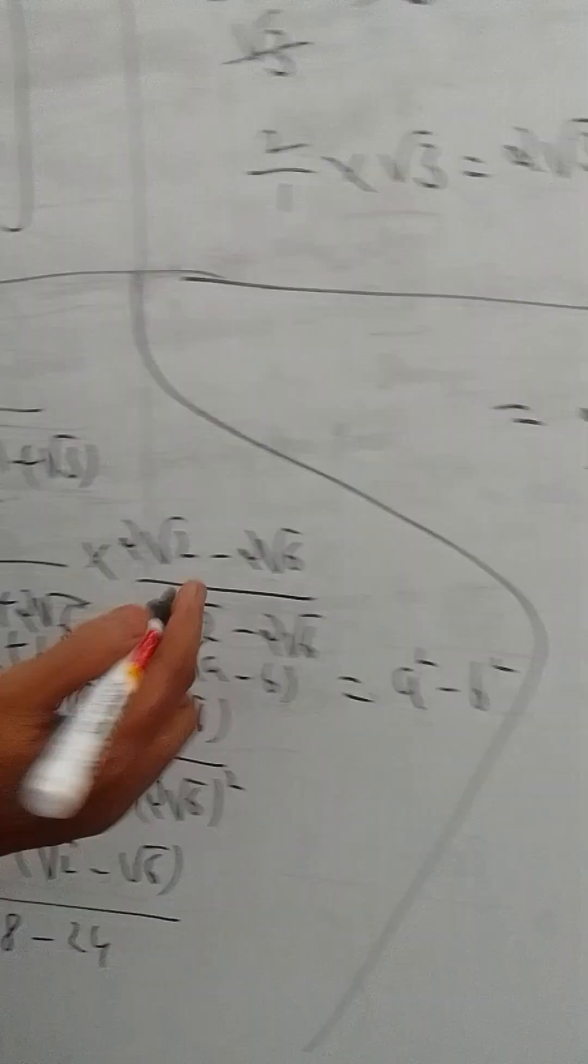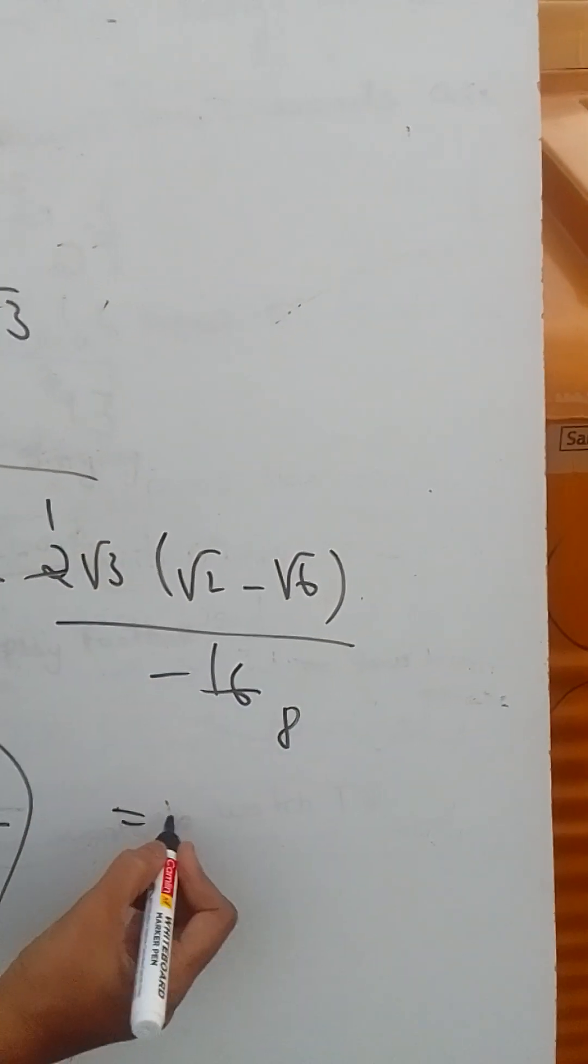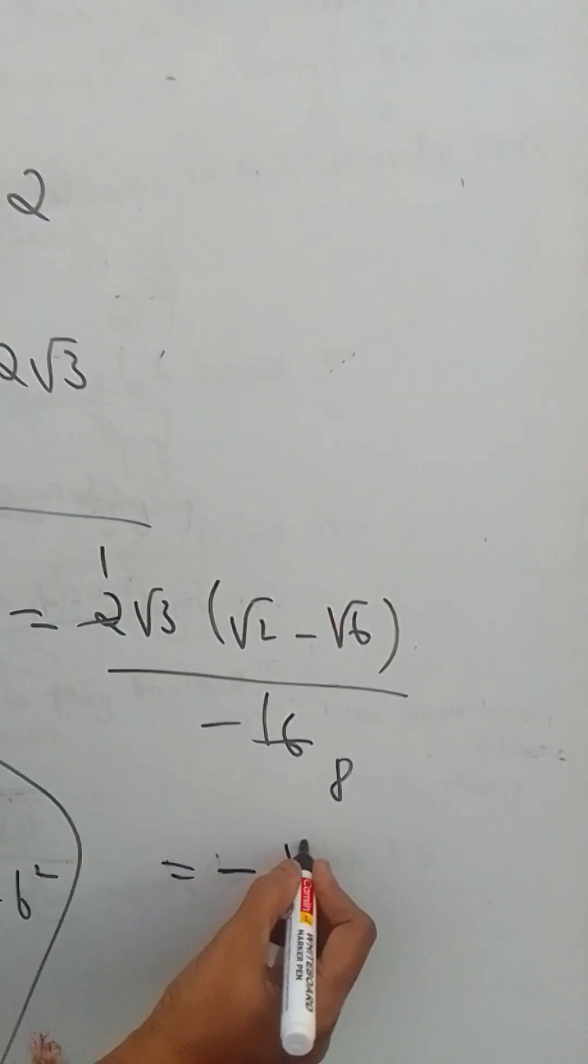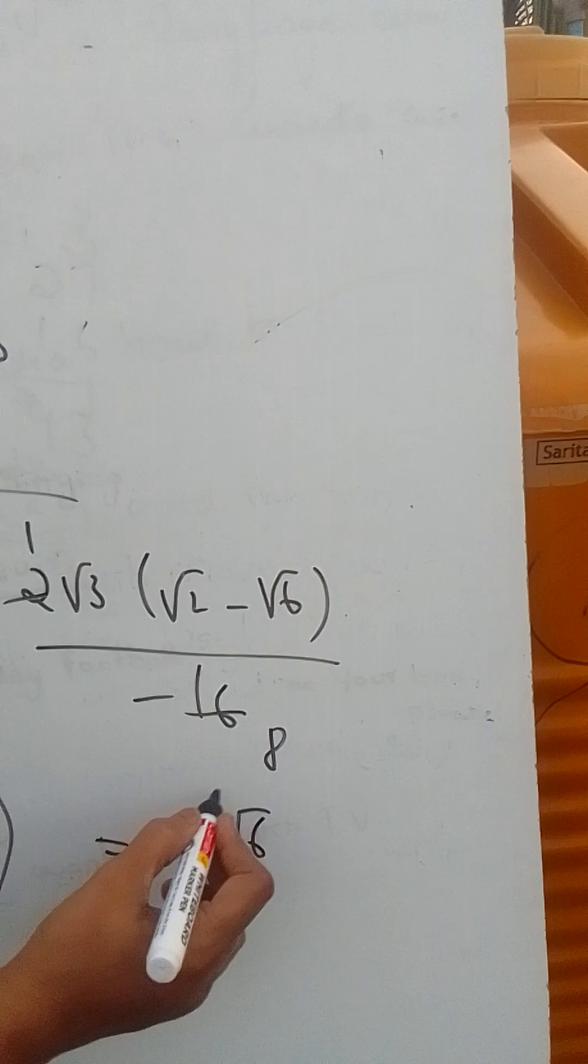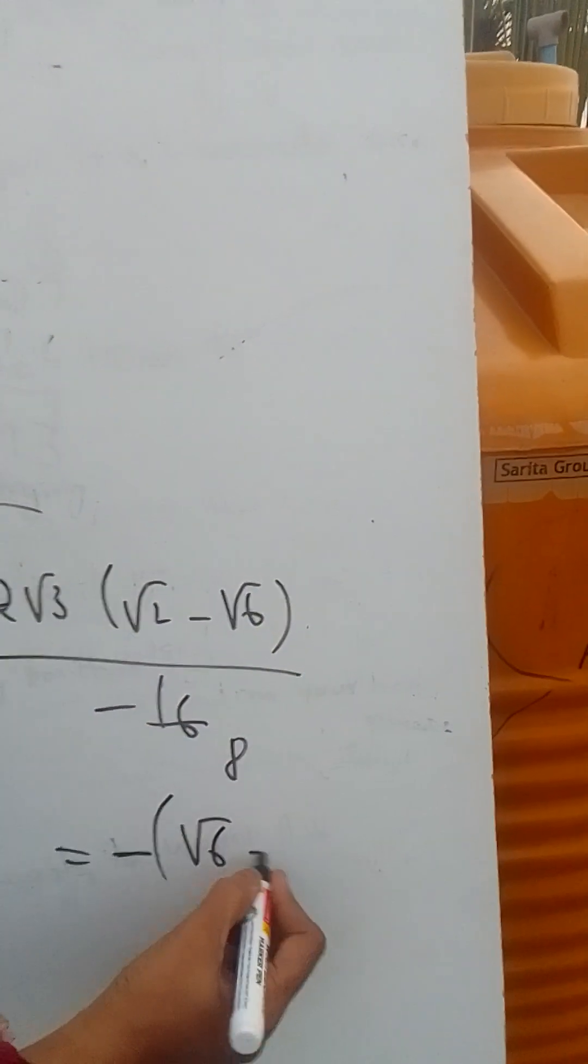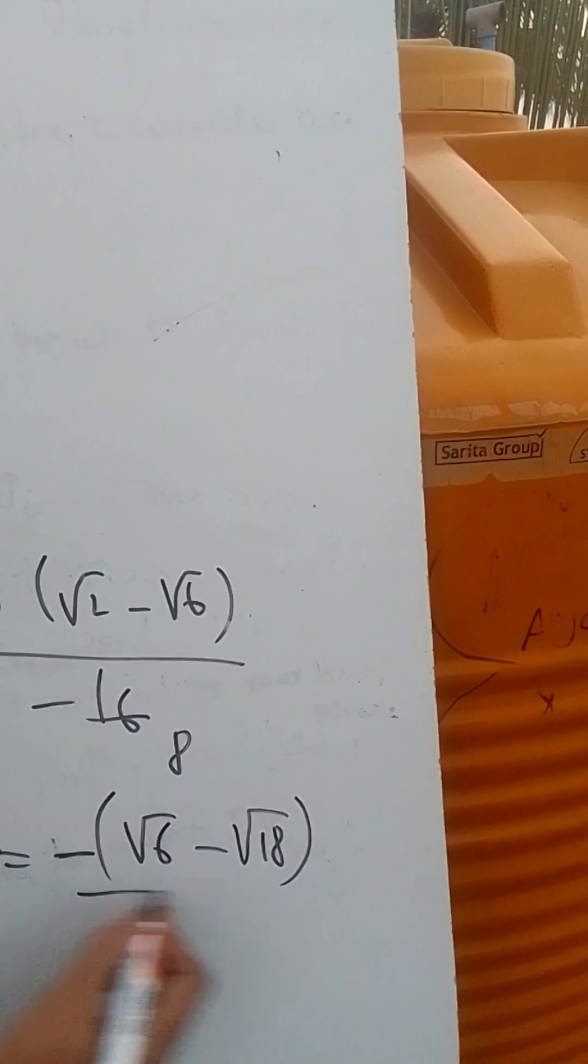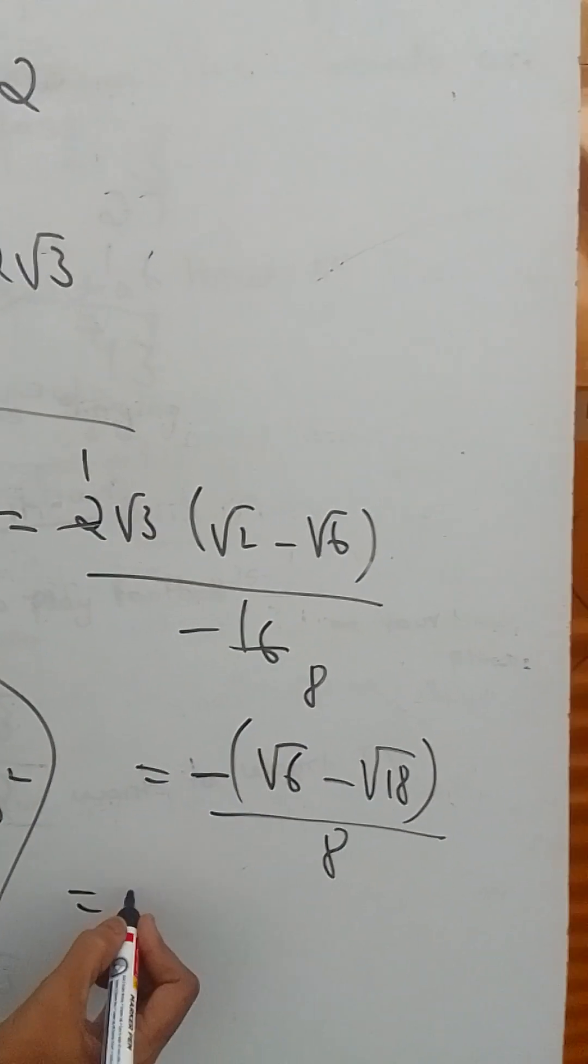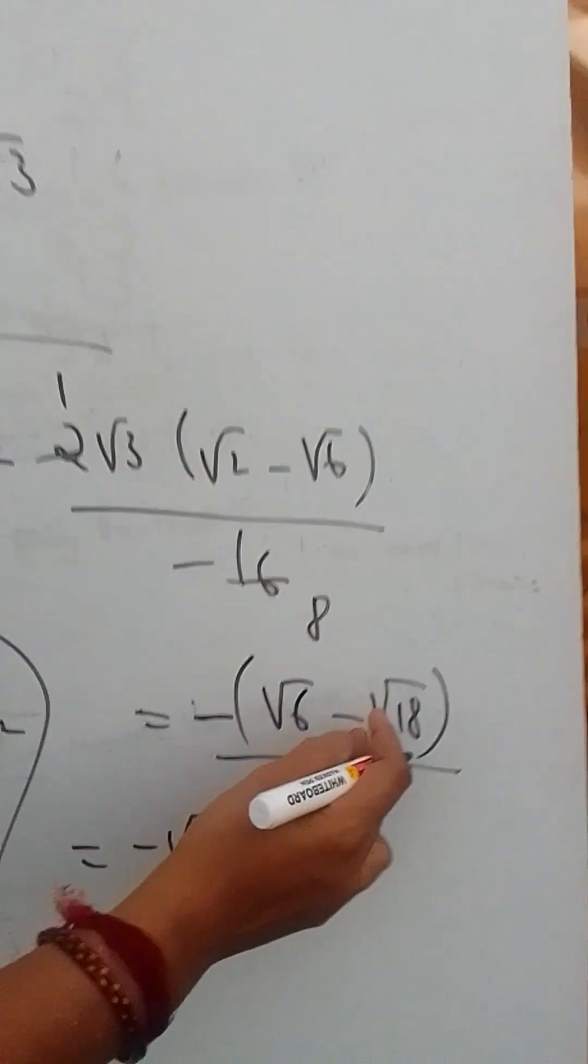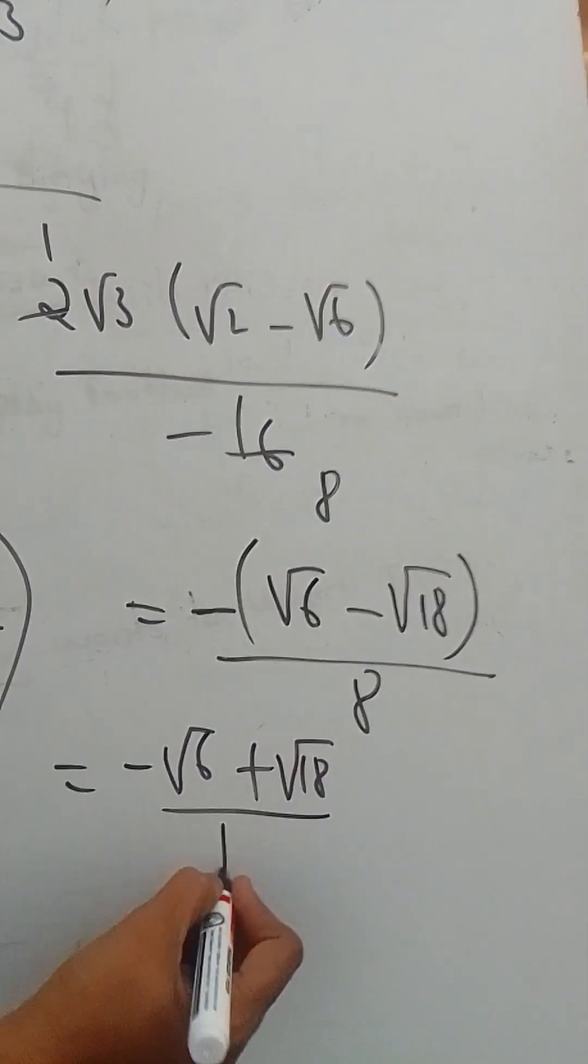2 divided by minus 16 is minus 1 by 8. Plus by minus is minus. Minus root 3 into 2 is root 6, root 3 times root 6 is root 18 divided by 8. Or minus root 6 minus, minus into minus plus root 18 by 8.